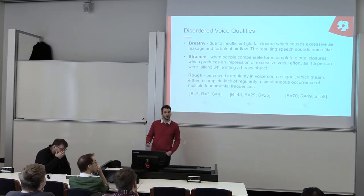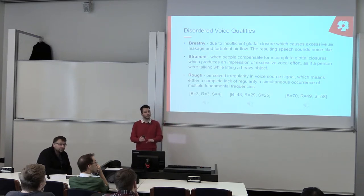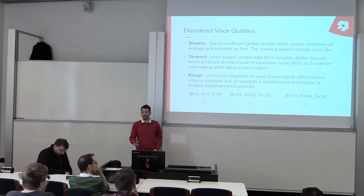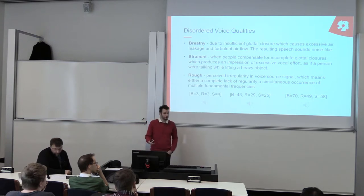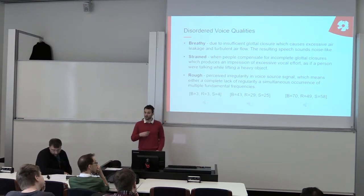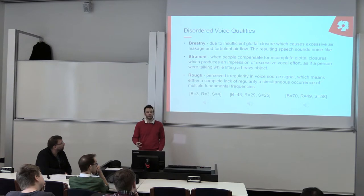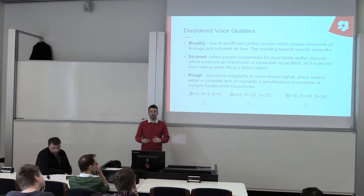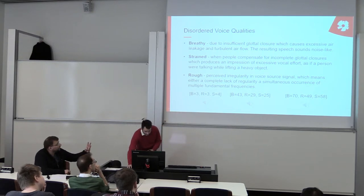Breathy voice occurs when the vocal folds, which close periodically, do not close properly and there is always some gap. Excessive air leaks through, forms a turbulent airflow, and the resulting speech sounds very noise-like. Strained voice occurs when people try to compensate for this incomplete closure by straining the muscles in the chest and neck area — it sounds as if a person were trying to speak while carrying a heavy object. Rough voice is a perceived irregularity where the voice is not stable in amplitude or frequency, jumping up and down.